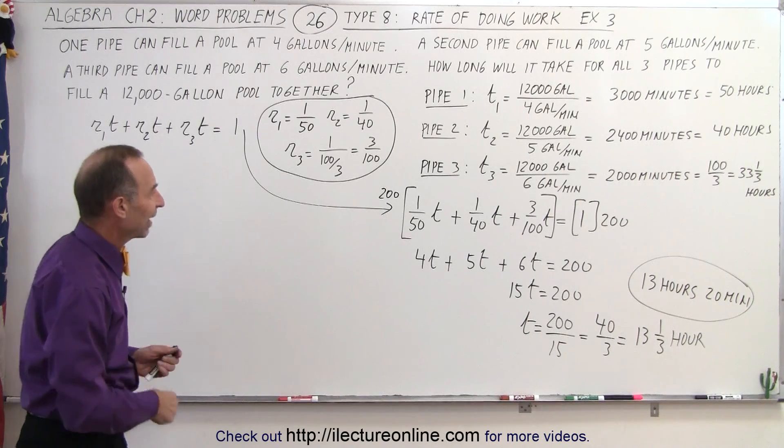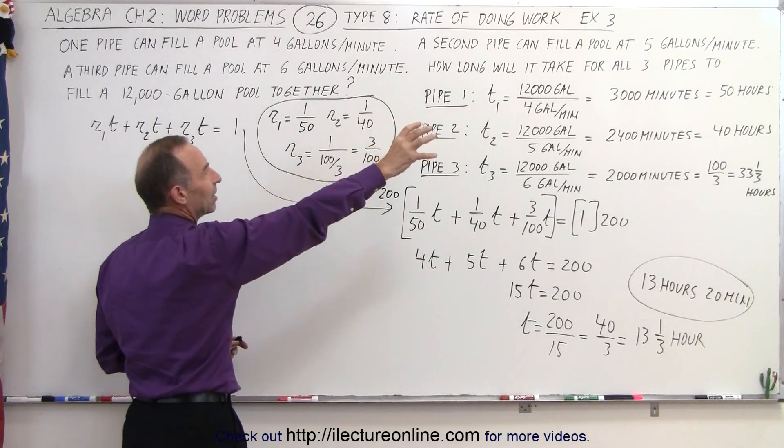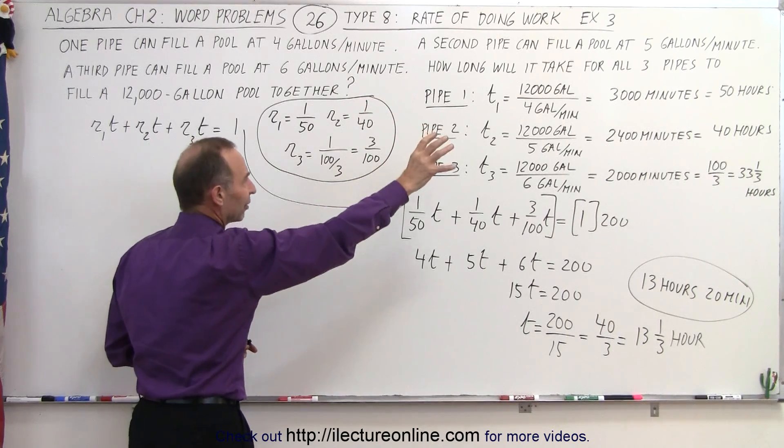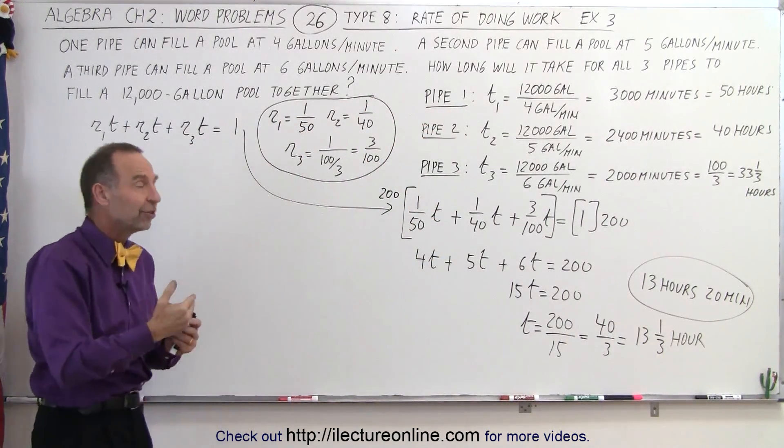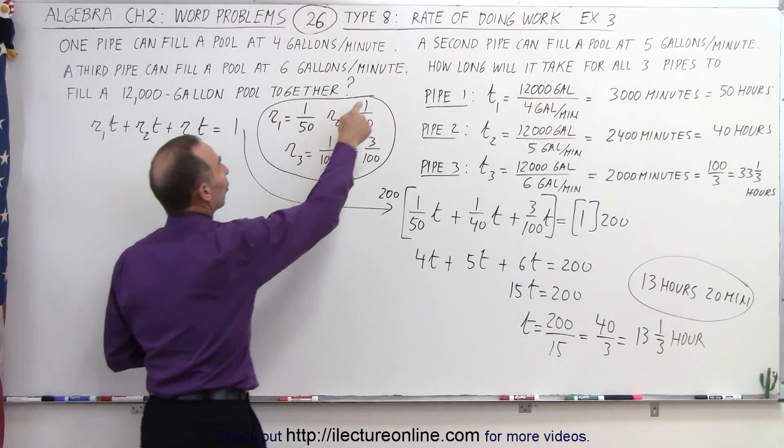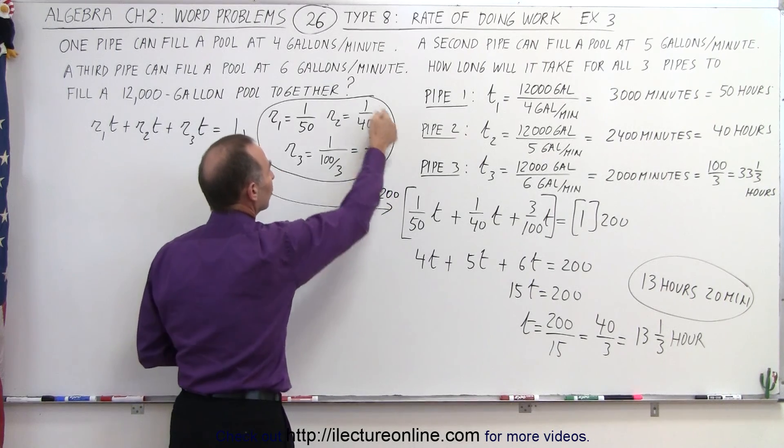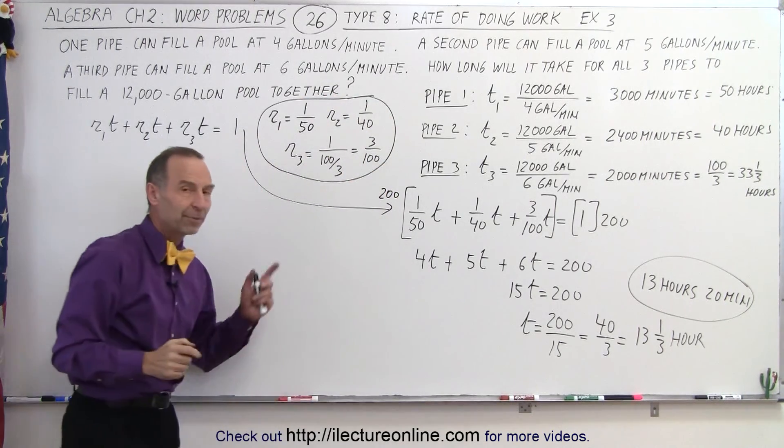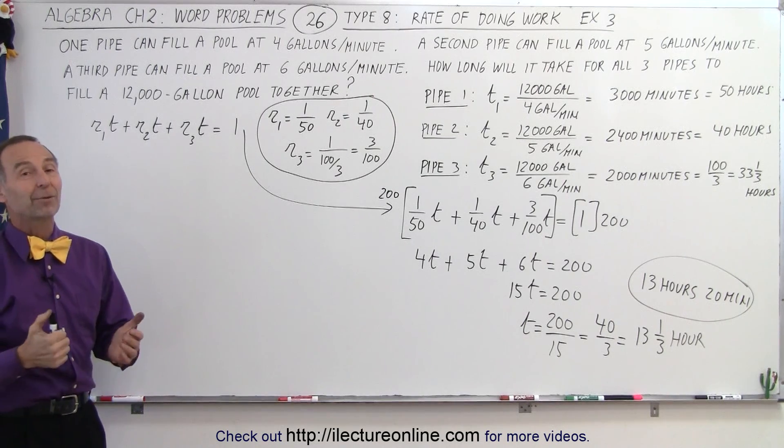Again, it's all about finding the rate. The rate can be found by taking the total time that it takes for that pipe by themselves to fill the pool. You take the inverse of that, which means you can fill 1/50th of the pool in one hour, 1/40th of a pool in an hour, and 3/100ths of a pool in an hour. Those are the three rates of the three pipes. Plug it into the equation, and you solve for t. And that's how it's done.